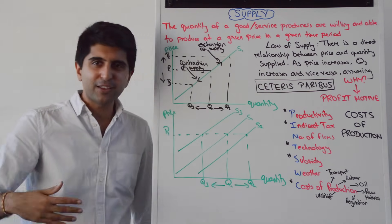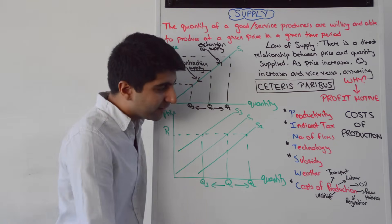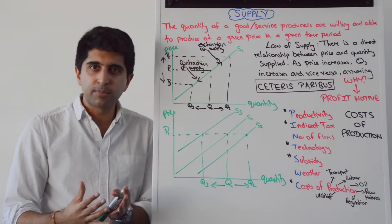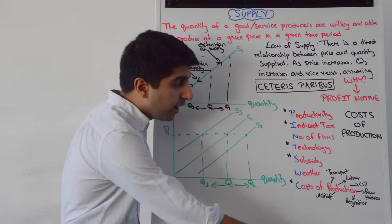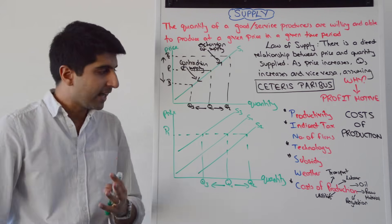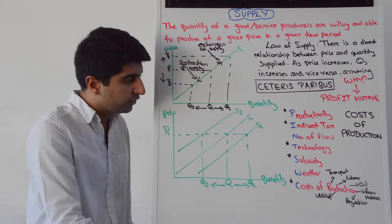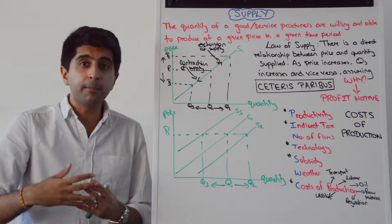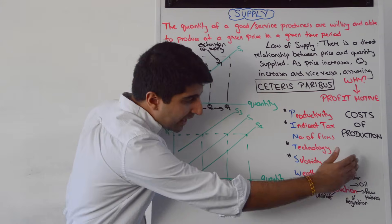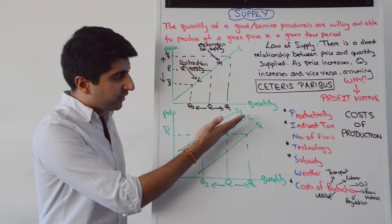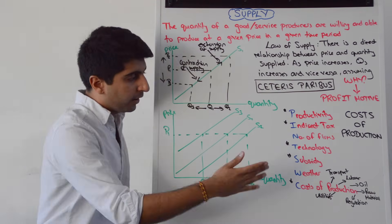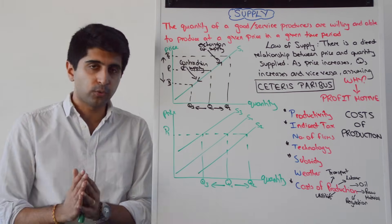C is a cheat — it stands for costs of production: all the other factors that can affect costs of production. Things like transport costs, labour costs, the price of oil, raw material prices, utilities such as gas, electricity, water, internet, and even rent. Also government regulations — health and safety standards and environmental policies — can increase costs of production. If any of these increase, the supply curve shifts to the left from S1 to S3. If any decrease, the supply curve shifts to the right from S1 to S2.